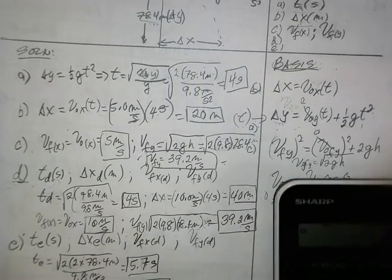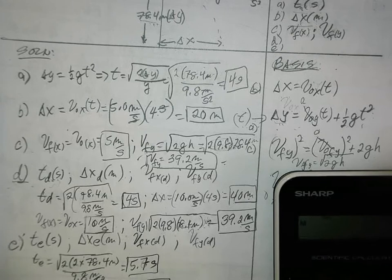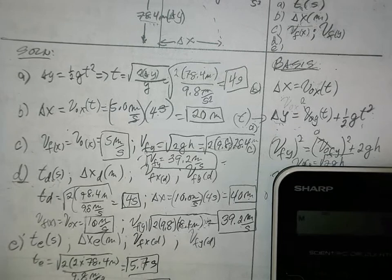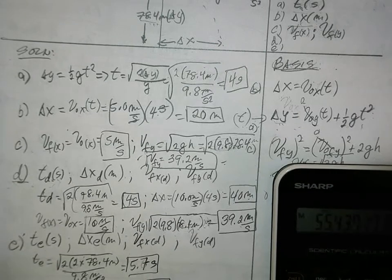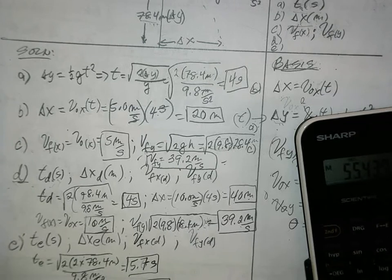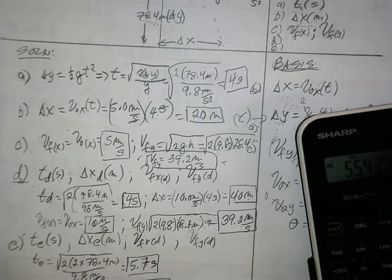Do that in the calculator. What do you get? 2 times 9.8 times 2 times 0.4 equals, then square root. You get 55.4 meters per second. Or just 55 is fine.